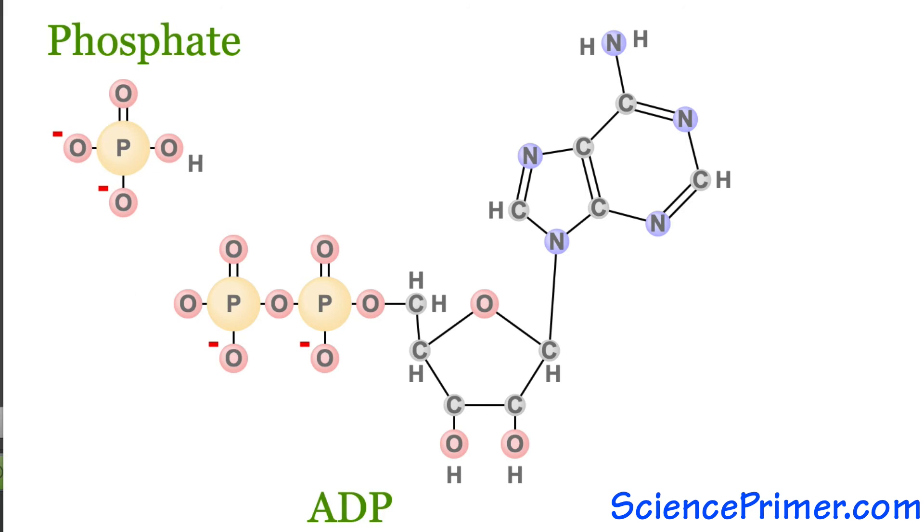In the process, an inorganic phosphate is created, and adenosine triphosphate is converted to adenosine diphosphate, or ADP. This reaction is reversible.